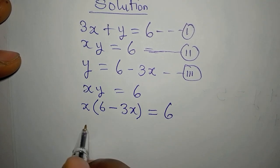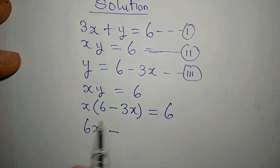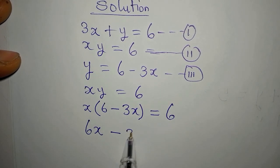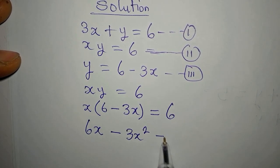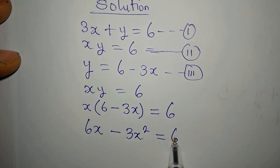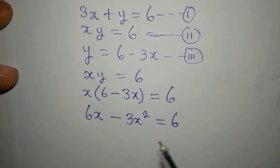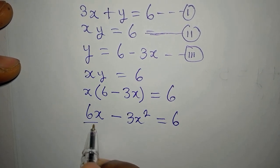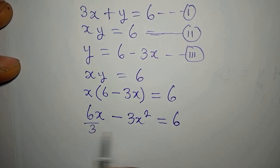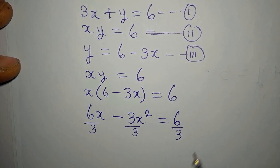x times 6 is 6x, then minus x times 3x gives us 3x squared, and this is equal to 6. But mind you, I can reduce this equation to a simpler form by dividing all through by 3, because 3 is common to all terms.